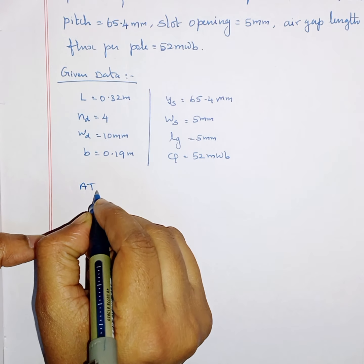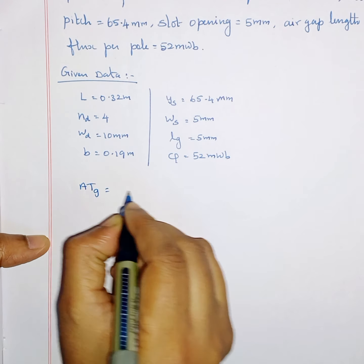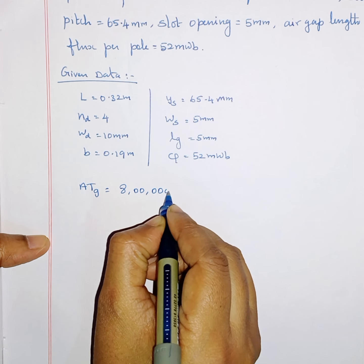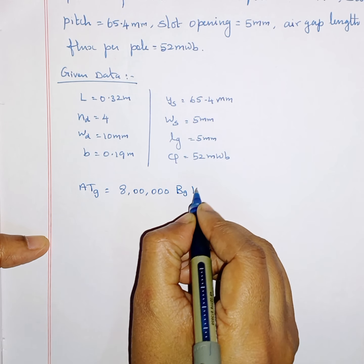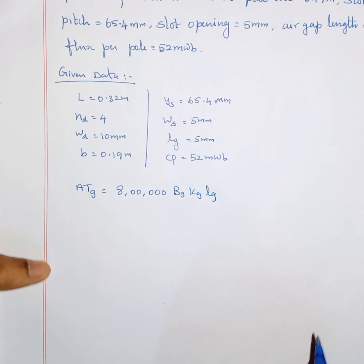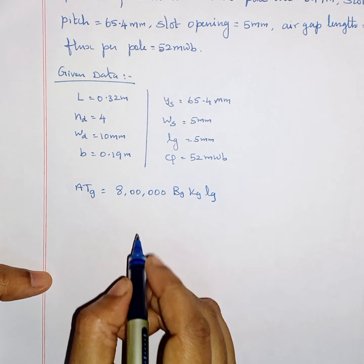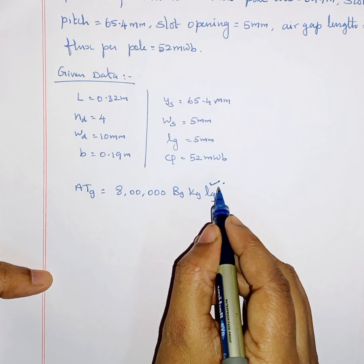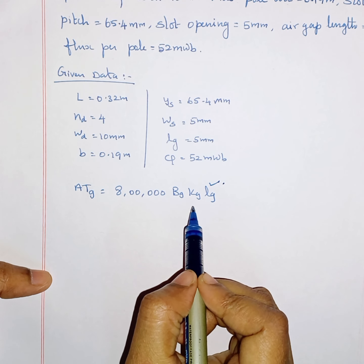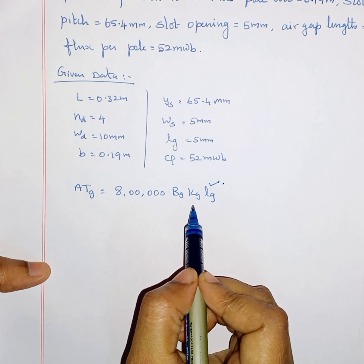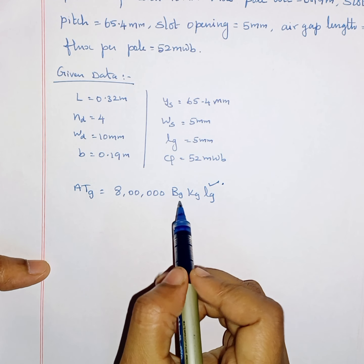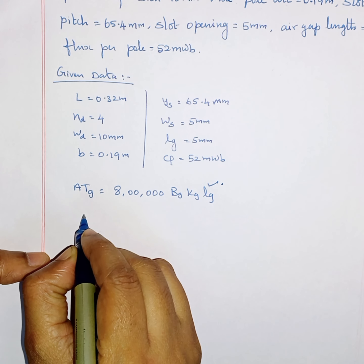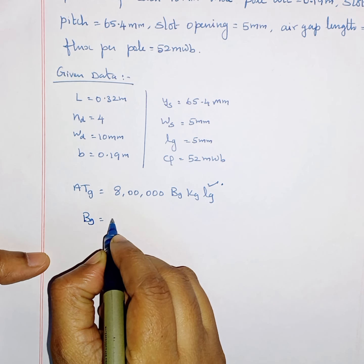We are going to find out ATG, which is equal to 8 lakh times BG times KG times LG. The length of the air gap is given in the problem, KG we are going to find out, and BG we are also going to find out.